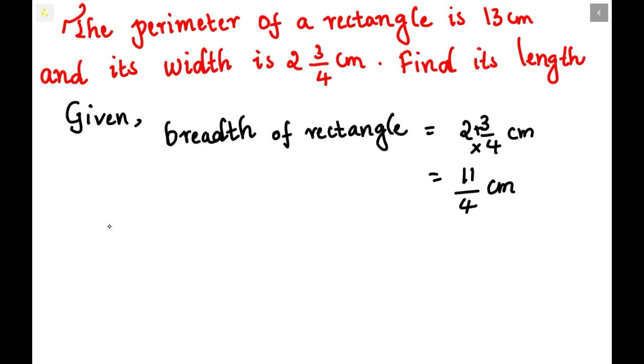Now the perimeter of this rectangle is 13 cm. This 13 cm can be equated with the formula, that is 2(L+B). With this formula only we will be finding the rectangle's perimeter.